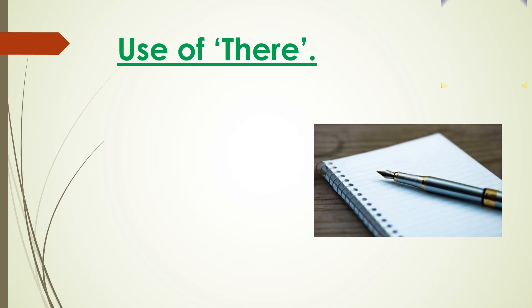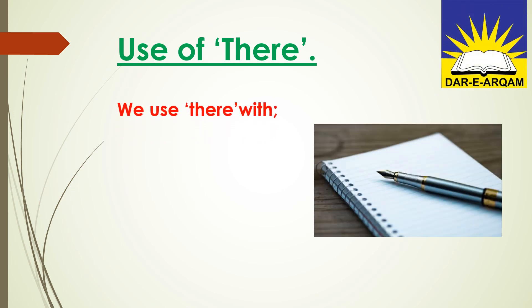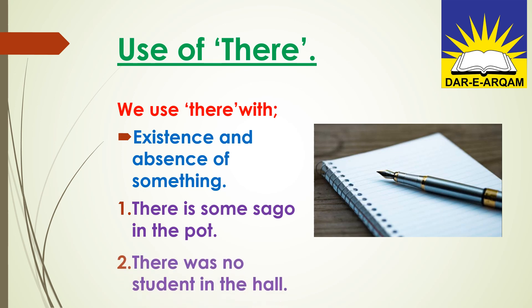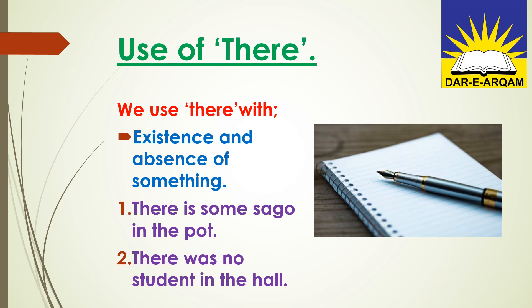Now we have to discuss use of 'there.' We use 'there' with existence and absence of something — when something is present or not present. Here are two examples, one of presence and one of absence: There is some sugar in the pot — it is showing something is present, so we use 'there.' There is no student in the hall — this shows the absence of students, so we use 'there.'